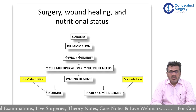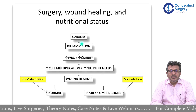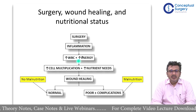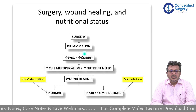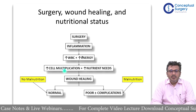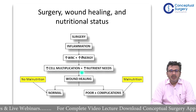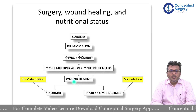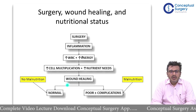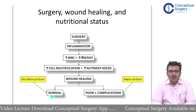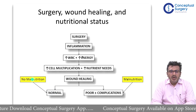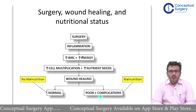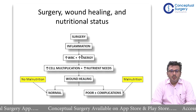Surgery will always influence and cause some inflammation. After the inflammation process, there will be increased white blood cells and increased energy requirements. Cellular multiplication will be very high and there will be very high nutrient needs. This ultimately affects wound healing if not taken care of. On one side you may have normal wound healing when the patient does not have malnutrition, while malnutrition will lead to poor outcomes and more complications.